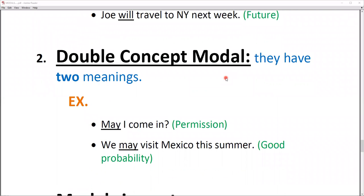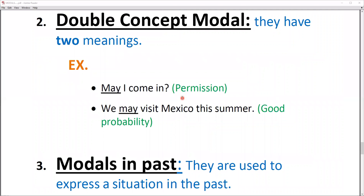Now here Double Concept. They have two meanings. May I come in? It is asking for the permission. We may visit Mexico this summer, we can go. This is the probability. So here may I come in has double meaning, double concept.